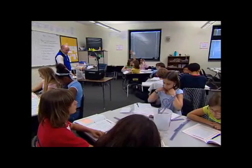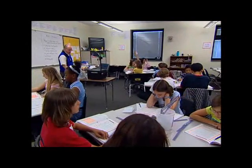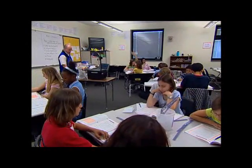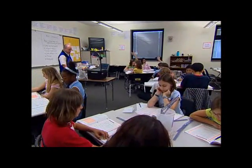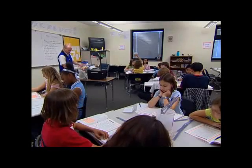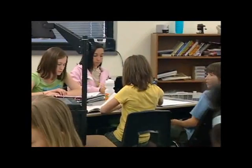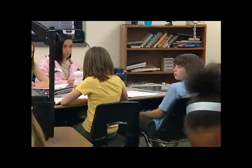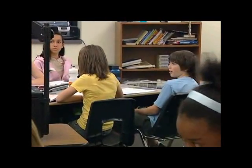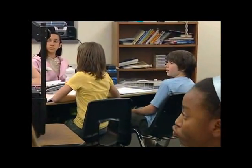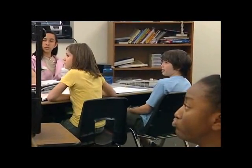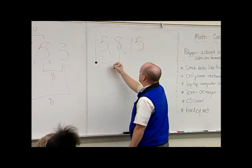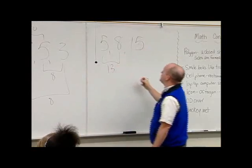Number five — side lengths of five, eight, and fifteen. Is this going to build a triangle for us? How about you, Ethan? What do you think? It doesn't work. It's not possible because if you do five and eight, add five and eight together, it's less than fifteen. So five and eight is thirteen.